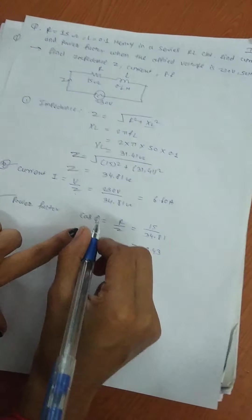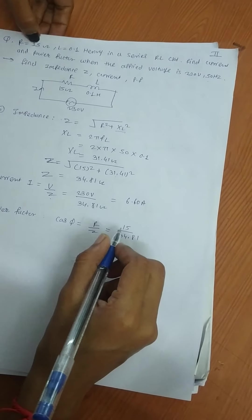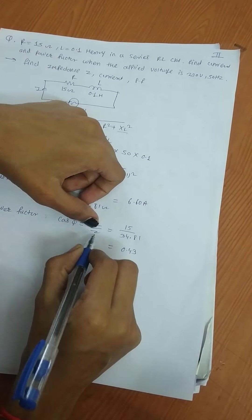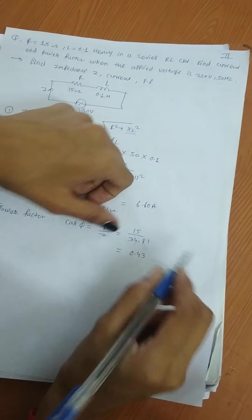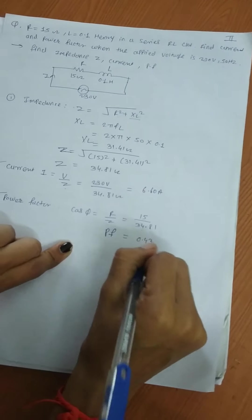Next, find power factor. Power factor cos φ = R/Z. The value of R is 50 ohm and impedance Z = 34.81, therefore the power factor is 0.43.